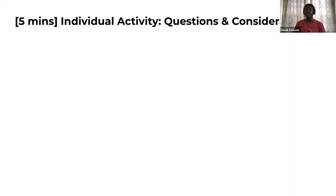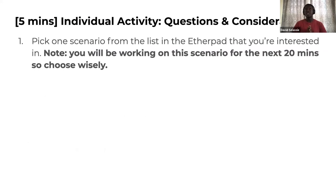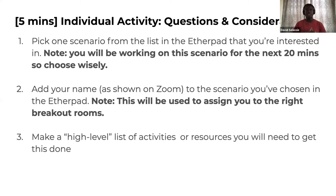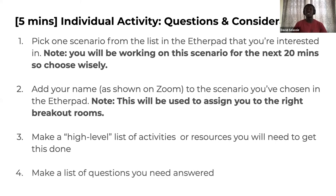I listed these scenarios for you to really think about how you go about designing a data literacy approach. For the individual activity — five minutes — pick one scenario from the list in the etherpad that you're interested in. Note that you'll be working on this scenario for the next 20 minutes, so choose wisely. Add your name to the scenario you've chosen to help us break into breakout groups. The task is to make a high-level list of activities or resources you would need, and make a list of questions you need answered.